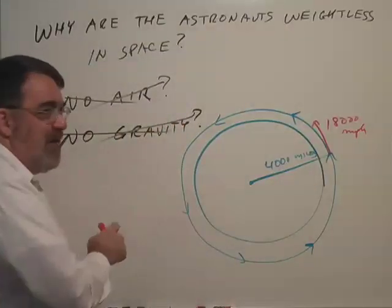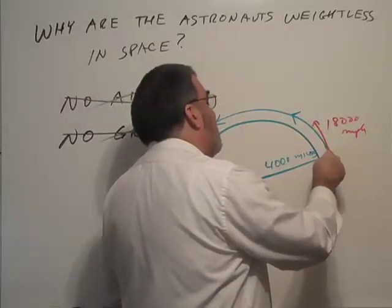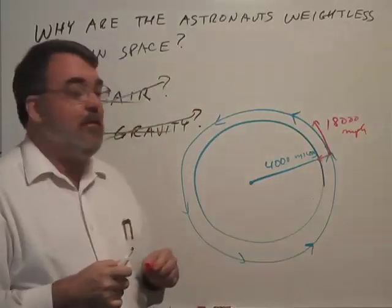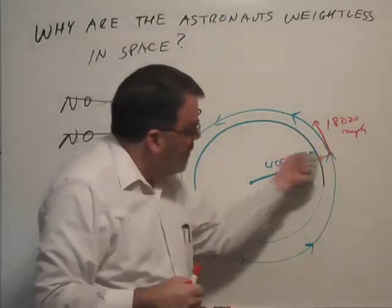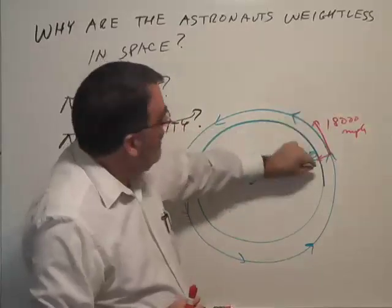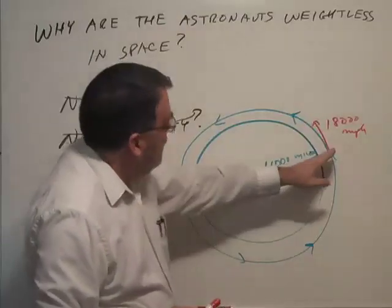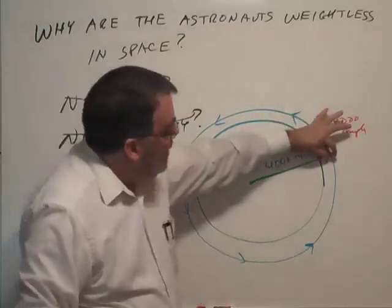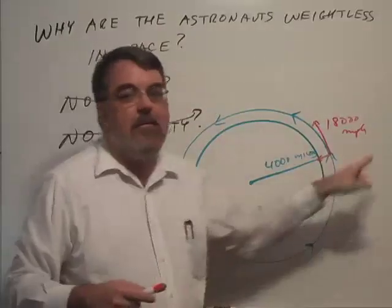Well, it's because there is gravity up there. The Earth is pulling the astronauts back toward the center of the Earth. And so, this pull, the pull of gravity bends the path, bends the path so it ends up in a circle. So gravitational pull is bending this path in order to create this circular orbit.